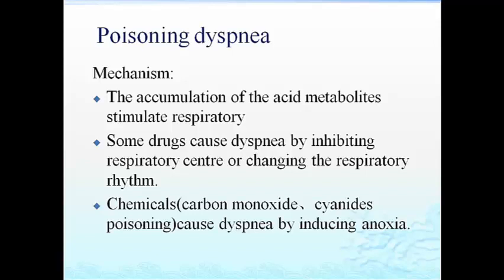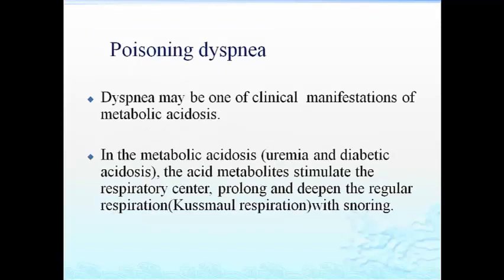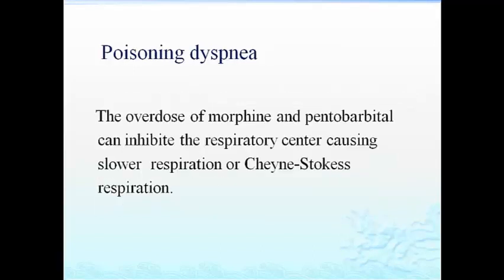Poisoning dyspnea is one of the clinical manifestations of metabolic acidosis, such as in uremia and diabetic acidosis. The acid metabolites stimulate the respiratory system, prolonging and deepening respiration — this is called Kussmaul breathing. Overdose of morphine or phenobarbital can inhibit the respiratory system, causing slower respiration or Cheyne-Stokes respiration.